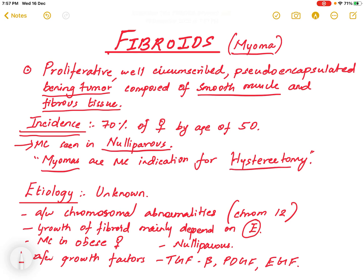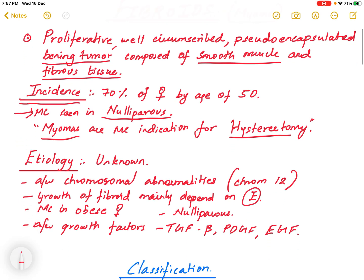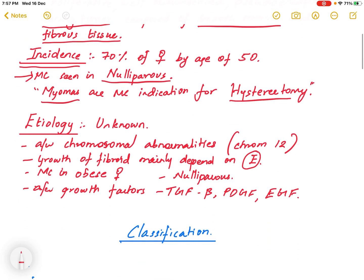The etiology of myomas is usually unknown, but it is associated with chromosomal abnormalities, particularly involving chromosome number 12. The growth of fibroids mainly depends on estrogen — both estrogen and progesterone — but predominantly on estrogen levels.